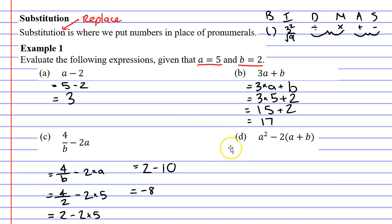We will now move on to question D. You'll notice that this time we have a number next to a set of brackets. This is another situation where there is a hidden multiplication. It's going to be a squared minus 2 times bracket a plus b. Let's now substitute the numbers in place of the pronumerals. a is 5, and in the bracket a is 5 plus b which is 2.